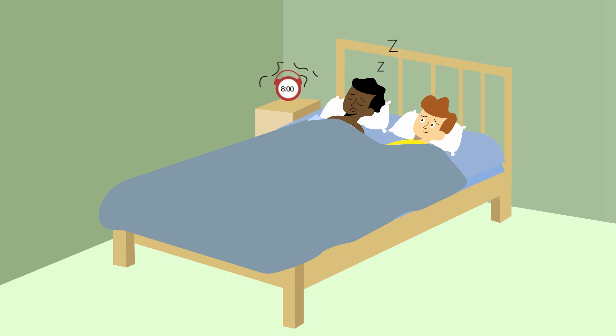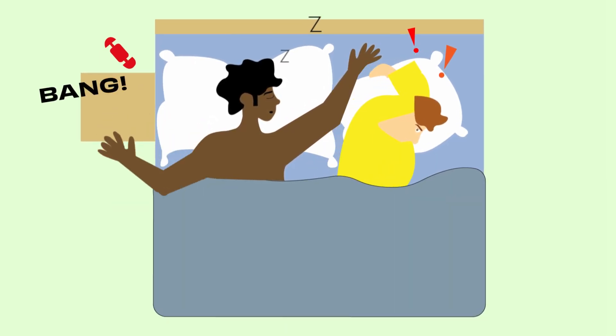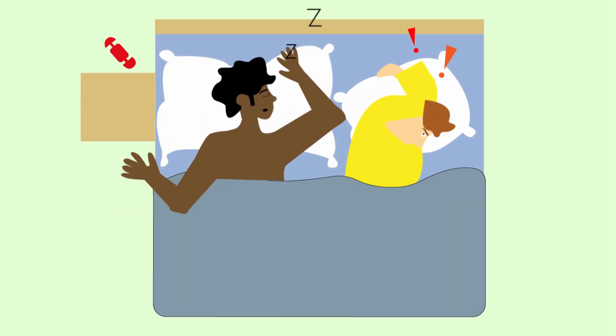In addition, it is possible that your relative moves his arms or legs involuntarily while sleeping. He may have what is called periodic limb movement disorder.